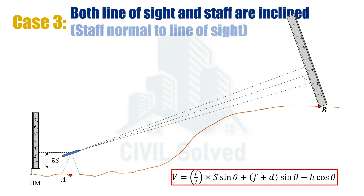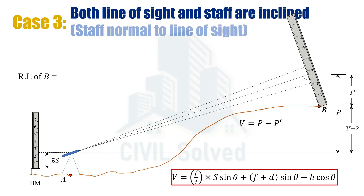Now let's consider the angle of elevation case. In this case, V is smaller than P by the magnitude of P', so V = P − P'. For calculating the reduced level of point B under angle of elevation, the instrument axis is below point B, so we add V. The final equation for the reduced level of point B becomes: RL of benchmark + backsight + V.